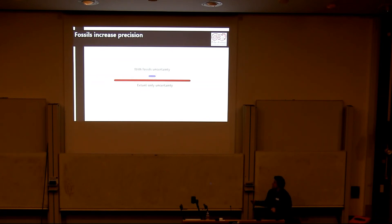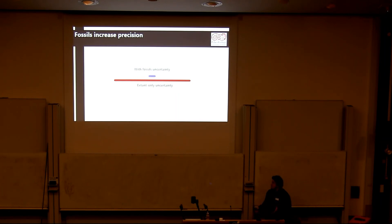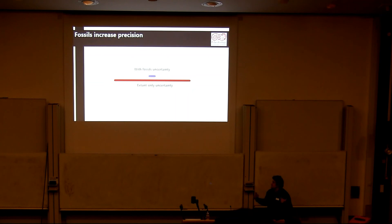One thing that fossils do that's really important is they increase our uncertainty — or rather, reduce our uncertainty — around estimates. There's a great decrease in our confidence intervals around ancestral size estimates when incorporating fossils, probably because we have fossils that are closer to the root of the tree. So even in cases where fossils aren't overturning our understanding, they're important to enrich and increase precision in what we're inferring.